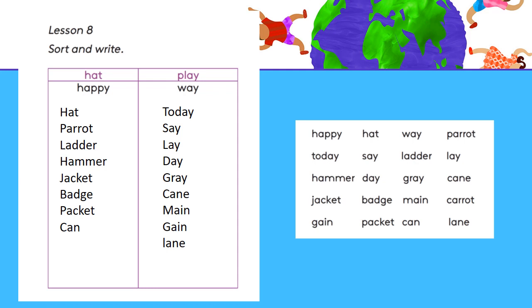Now take your workbook — Lesson 8: Sort and Write. They have given you some words. Sort them into short 'a' sound words: hat, happy, parrot, ladder, hammer, jacket, batch, packet, can. And long 'a' sound words: play, way, today, say, lay, day, gray, main, gain, lane. Please write down these words in your workbook.